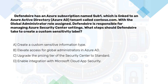We have an Azure subscription linked to an Azure Active Directory tenant. With the global administrator role assigned, we are responsible for managing Azure Security Center settings. What steps should we take to create a custom sensitivity label? A, create a custom sensitive information type; B, elevate access for global administrators in Azure Active Directory; C, upgrade the pricing tier of Security Center to Standard; D, enable integration with Microsoft Cloud App Security.